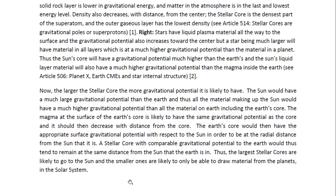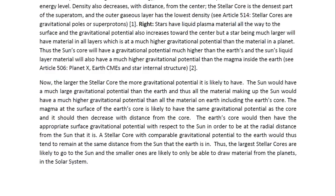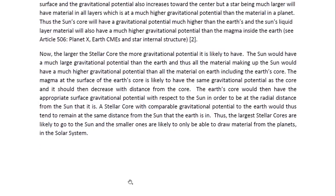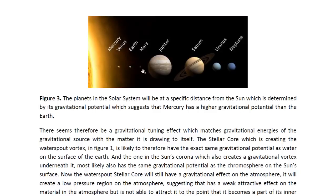A stellar core with comparable gravitational potential to the Earth would thus tend to remain at the same distance from the Sun that the Earth is. Thus, the largest stellar cores are likely to go to the Sun, and the smaller ones are likely to only be able to draw material from the planets in the solar system. The planets are therefore at the appropriate distance from the center of the Sun depending on their gravitational potential. Remember, gravitational potential is energy per unit mass. Even though Jupiter may have more mass than the rest of the planets, the average gravitational energy per unit mass is less than Earth's. Mercury would be the planet that has the highest gravitational potential because it is the innermost planet.